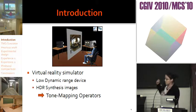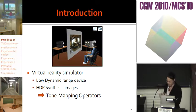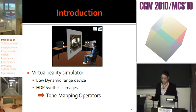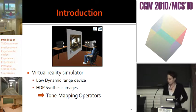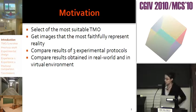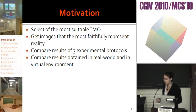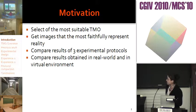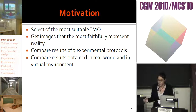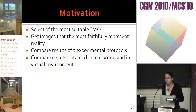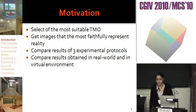Tone mapping operators compress the dynamic range to present images that try to faithfully reproduce the captured scene. But many tone mapping operators are available. So the motivation of this study is the selection of the most suitable tone mapping operator to get an image that most faithfully represents reality, and for that, psychovisual tests are carried out.